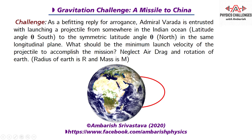So to recap, we are throwing a projectile from latitude θ south and it is to land at latitude θ north, in the same longitudinal plane. We want to find the minimum velocity, and we have to neglect air drag and the rotation of Earth.